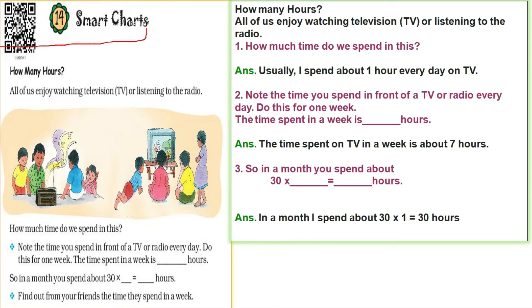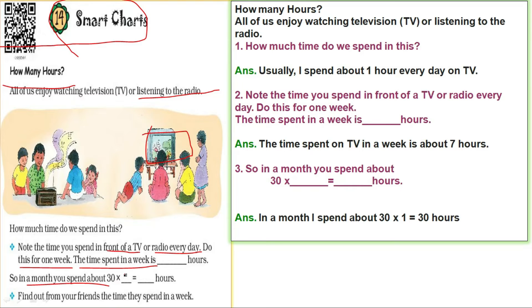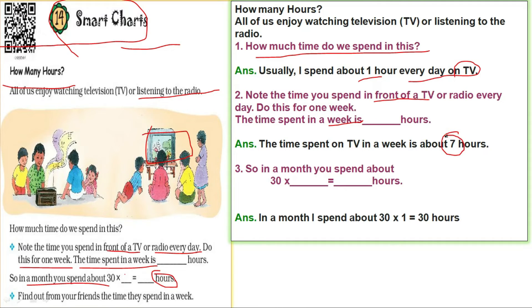The activity for Class 4 smart chart: How many hours do you enjoy watching television or listening to the radio? Note the time you spend in front of a TV or radio every day, and do this for one week. The time spent in a week — for example, if I spend 1 hour every day on TV, that is 7 hours in a week. In a month, 30 × 1 = 30 hours.